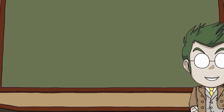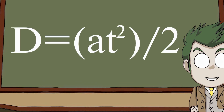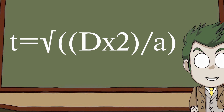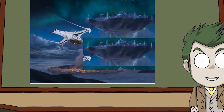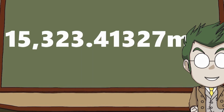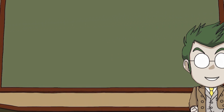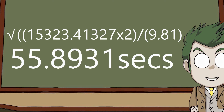Anyway, calculating time. If we take this equation and rearrange it a bit, we find that time equals the square root of distance times 2 over acceleration. Now, the distance we need is how far Atlas will fall. Using this long shot, we can find out that Atlas is about 15,323.41327 meters high in the sky — which is only about half the height at which planes fly. So plugging these numbers into the formula gives us 55.8931 seconds of falling in a vacuum.